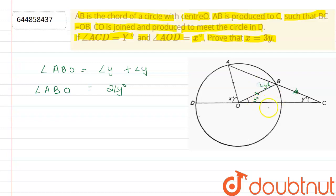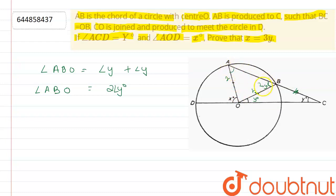We have to prove that X is equal to 3Y. Since OA and OB are both radii of the circle, OA equals OB, so triangle OAB is also an isosceles triangle. Therefore, angle OAB equals angle OBA, which means angle OAB is also 2Y.